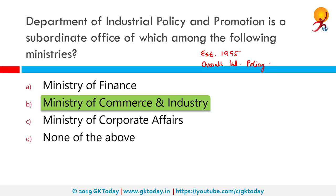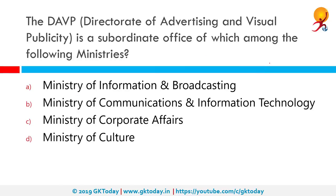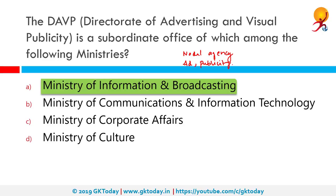The DAVP, or Directorate of Advertising and Visual Publicity, is a subordinate office of which ministry? DAVP is a nodal agency that undertakes multimedia advertising and publicity for various ministries. It makes ads and designs publicity campaigns for government bodies, and many autonomous bodies also use DAVP as a service agency. It endeavors to communicate at grassroots level on behalf of various central government ministries. It is of course part of the Ministry of Information and Broadcasting — any ads you see run by the government, this is the agency making them.